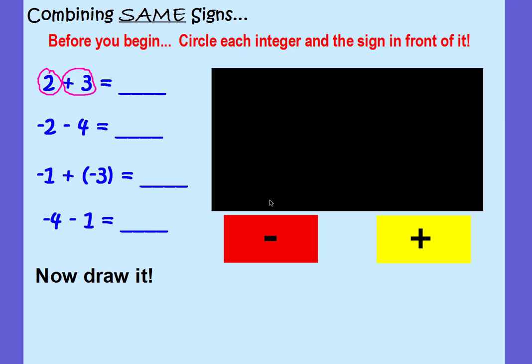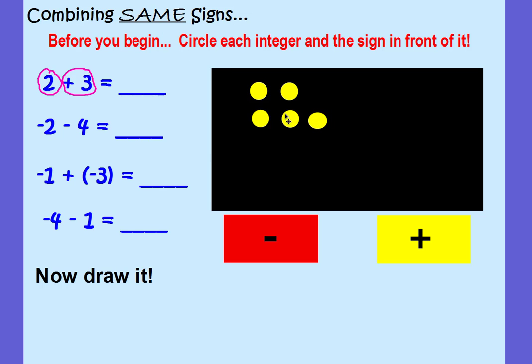I'm going to model it with the integer chips first, and then show you how to draw it on your own paper. I need 2 positives, so I'm going to pull out 2 yellow chips, because yellow represents positive. Each number gets its own row — so here's my positive 2. I'm combining that with 3 positives: 1, 2, 3. To find my answer, all I have to do is count all the chips. They're all positive and there are 1, 2, 3, 4, 5 of them. So 2 plus 3 equals 5.